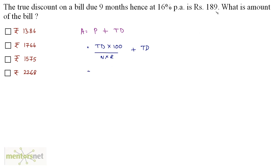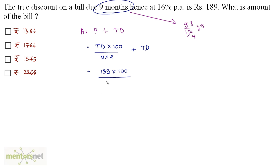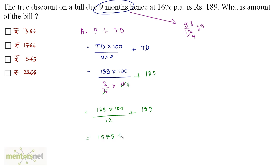N is 9 months, which we convert to years: 9 by 12 equals 3 by 4 years, because 3 threes are 9 and 3 fours are 12. So this is 3/4 times R (16%), and 4 times 4 is 16, giving 189 times 100 divided by 3 times 4 which is 12, plus 189. Solving this part gives 1575, and 1575 plus 189 equals 1764 rupees. This is the amount or the sum of the bill.